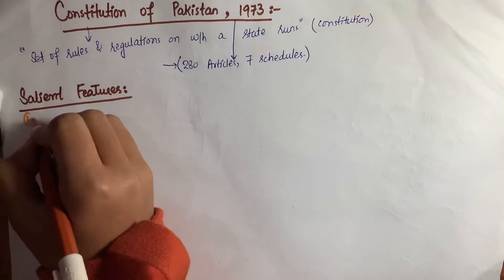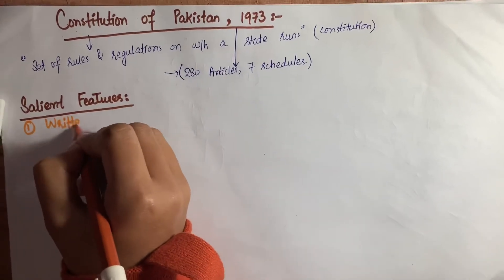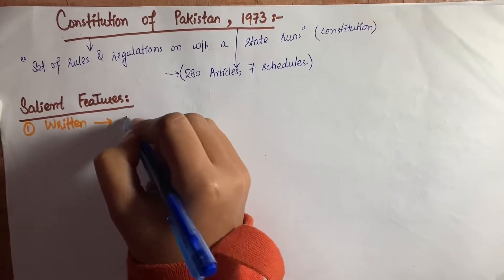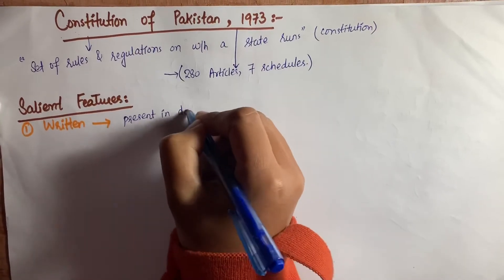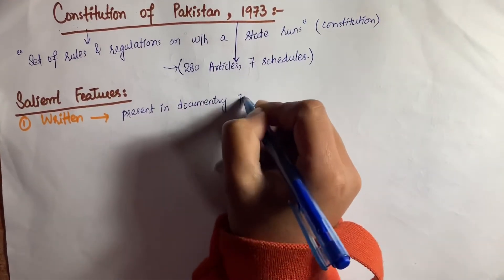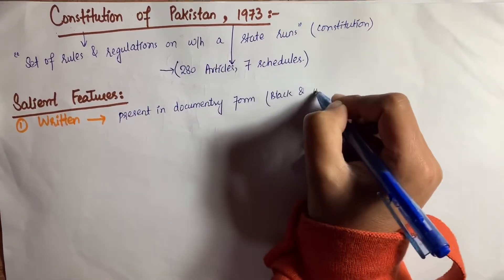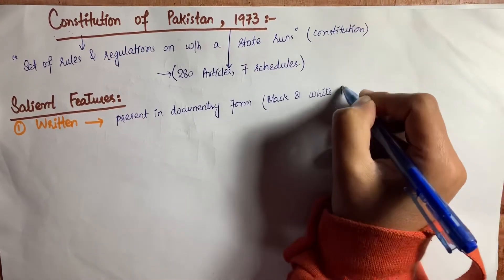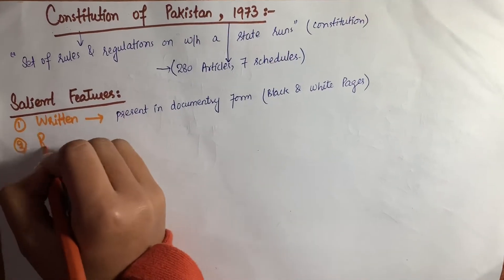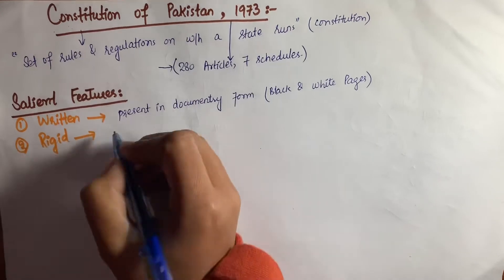Moving towards the salient features — salient features mean basic or main features of the constitution. The number one feature is that it is written. The Constitution of Pakistan is written, meaning it is present in documentary form in black and white pages.